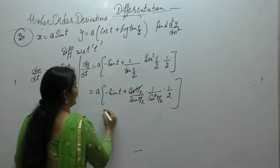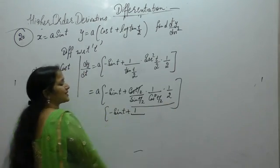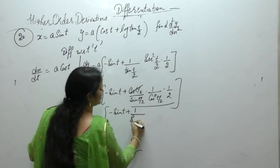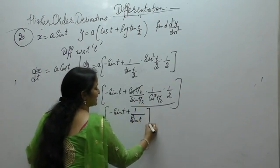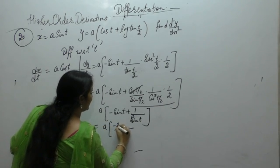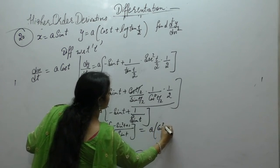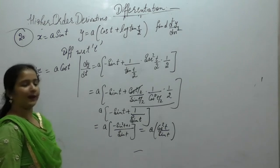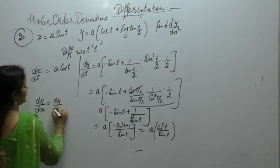For dy/dt: tan equals sin upon cos, so we get sec²(t/2) times 1/2, times cos(t/2)/sin(t/2). One cos cancels, giving 1 upon 2sin(t/2)cos(t/2). Using 2sinx cosx equals sin2x, so 2sin(t/2)cos(t/2) equals sin t. Therefore dy/dt equals a times (minus sin t plus 1/sin t), which is a(1 minus sin²t)/sin t, and 1 minus sin²t is cos²t. So dy/dt equals a cos²t upon sin t.